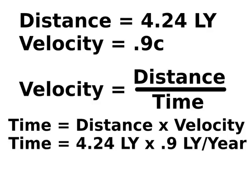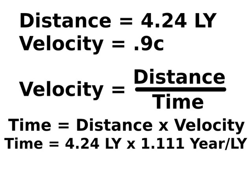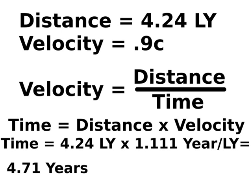A velocity of 90% the speed of light can also be written as 0.9 light-years per year. But we need light-years to cancel, so our answer is left in terms of years. And we can do this by taking the inverse of 0.9, which 1 divided by 0.9 is 1.111. Multiply the two together and we get about 4.7 years.